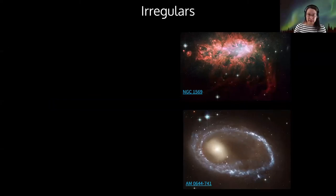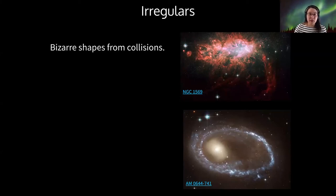I want to move on to our last category of galaxies. This is not part of the Hubble tuning fork, but is just a category of everything else. These are called irregular galaxies. They tend to have really bizarre shapes because, for the most part, these are generated when galaxies collide with each other.